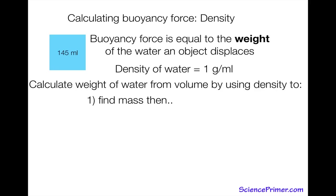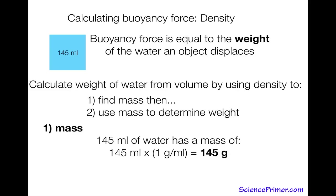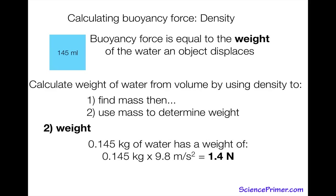We convert volume to weight in two steps. First, using the density of water, we take the volume and convert it to mass: 145 milliliters times 1 gram per milliliter equals 145 grams. We then convert grams to kilograms, giving 0.145 kilograms. In the second step we find weight by multiplying mass by acceleration due to gravity, 9.8 meters per second squared.